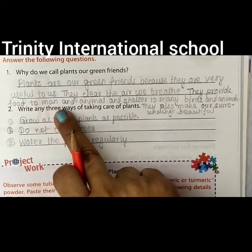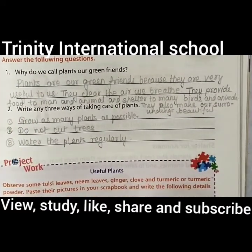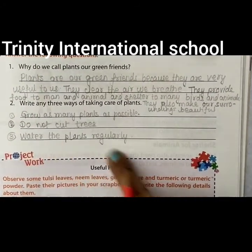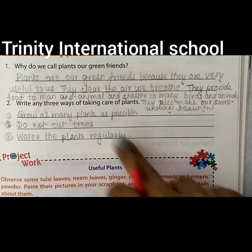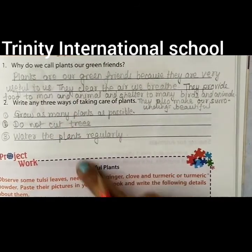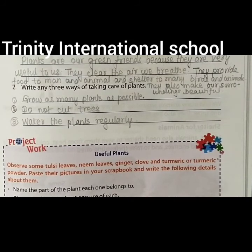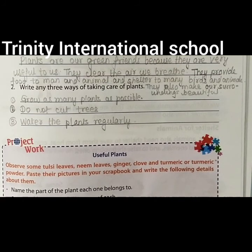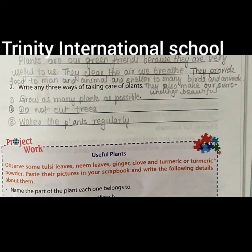Next: write any three ways of taking care of plants. Grow as many plants as possible. Do not cut trees. Water the plants regularly. These are the three ways I have written. Go through the chapter properly, learn the lesson, learn the question answers, and clear off your concepts. With this we complete the chapter with explanation as well as exercise.